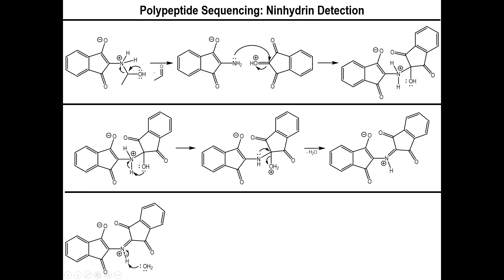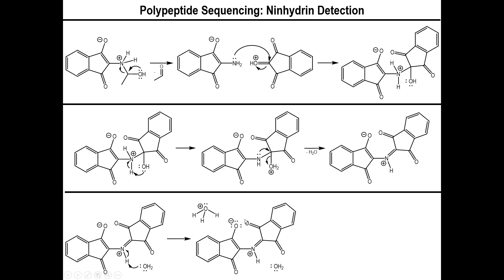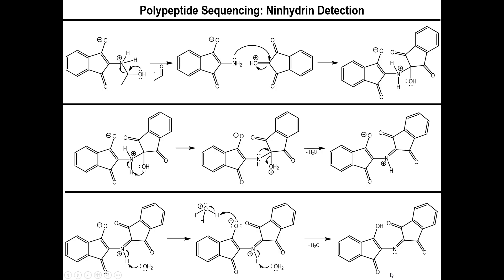The result is that you take the proton from your iminium completely off, have the electrons go back to nitrogen, and then dump that proton back onto the alkoxy group. So just remove that proton, dump it onto the oxygen, and voilà — you get to the final molecule that gives you all that high coloration, the ninhydrin purple-violet color.